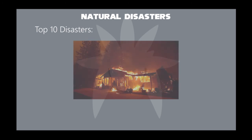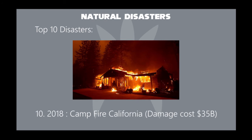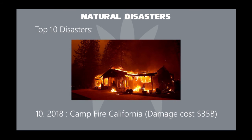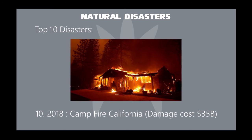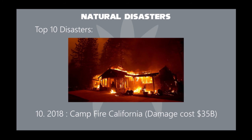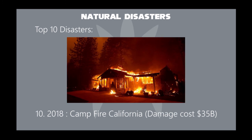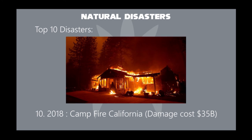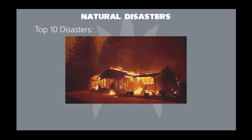In 2018, the Camp Fire ravaged North California, destroying more than 18,000 structures. The Camp Fire was the worst fire in California to this date, and was fueled by large national forests. The Camp Fire was started by electrical transmission lines owned and operated by Pacific Gas and Electricity. Its damage cost took $35 billion.